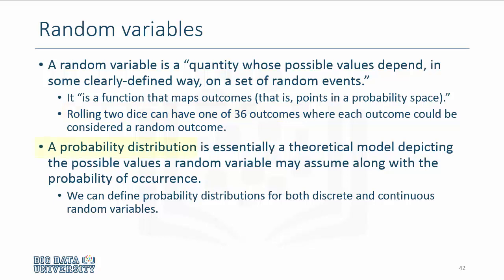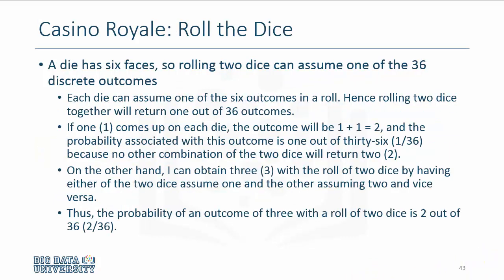The probability distribution is a theoretical model that depicts the possible values any random variable may assume along with the probability of its occurrence. We'll define this more with examples using two dice.